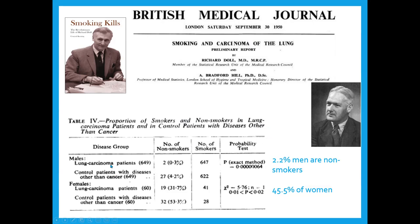What Doll and Hill did was find hospitals in London, verify lung cancer diagnoses when cases came in, then interview patients or their families about smoking — what they smoked, how much, cigars or cigarettes. They put together two 2×2 tables stratified by gender. At the time, only 2% of the men in this table were non-smokers: just two in the lung cancer group and 27 in the control group out of 649 patients each.